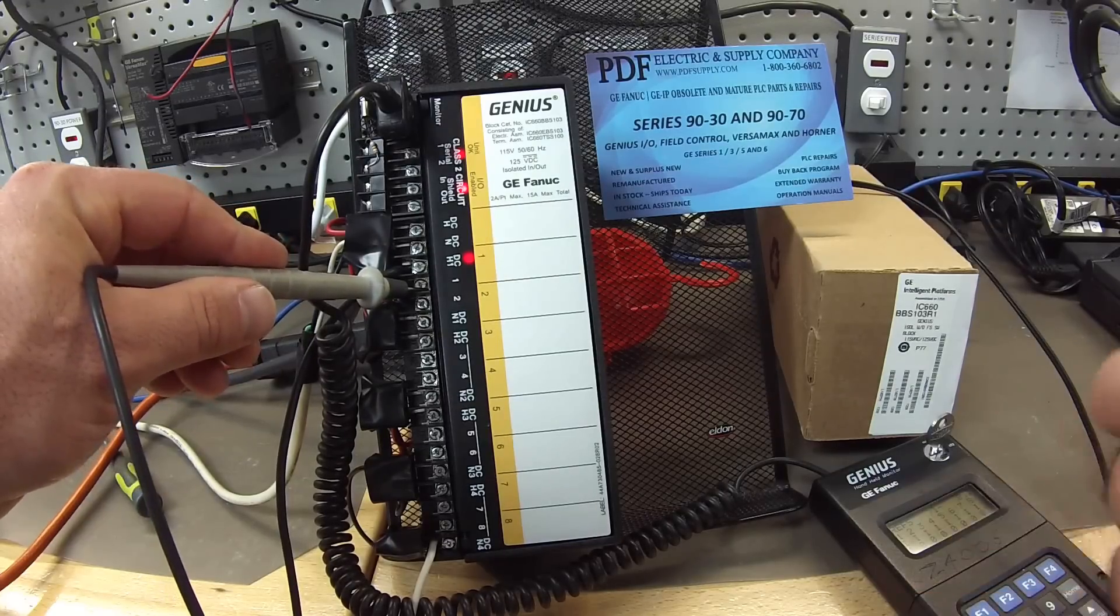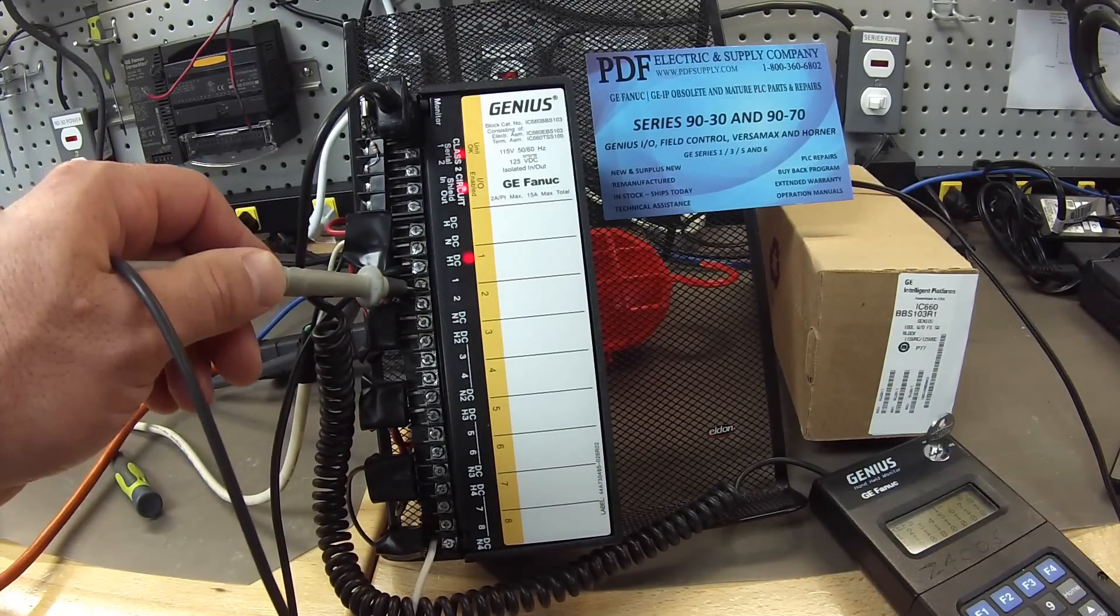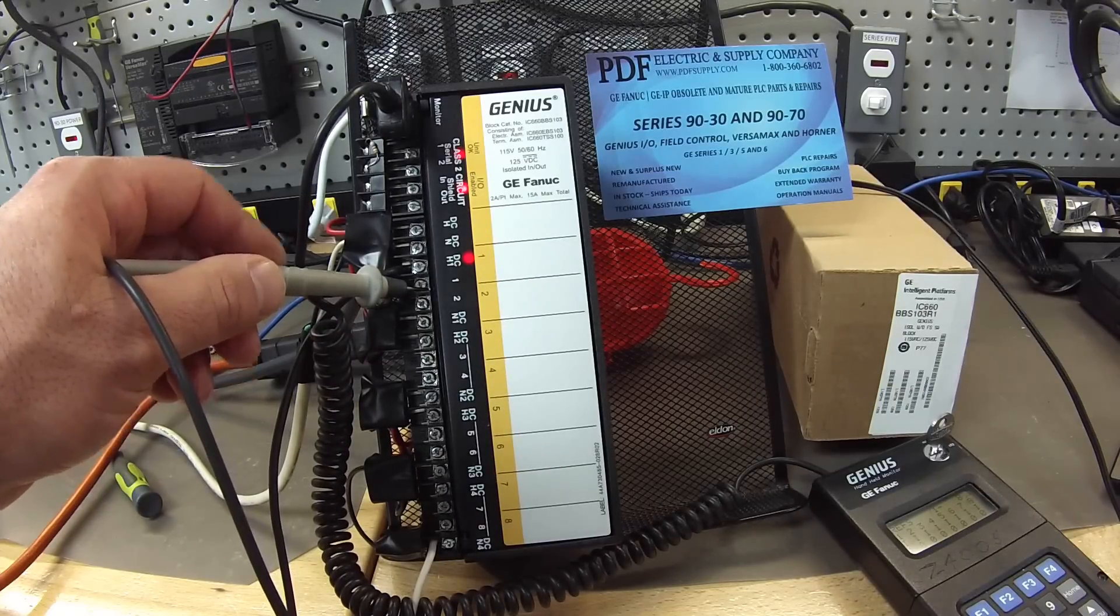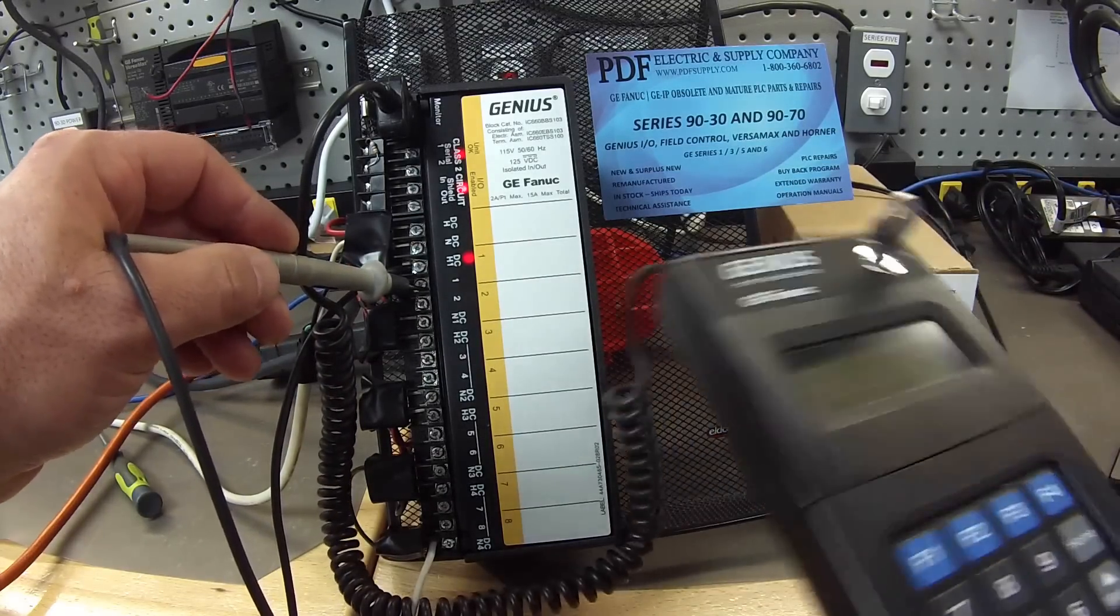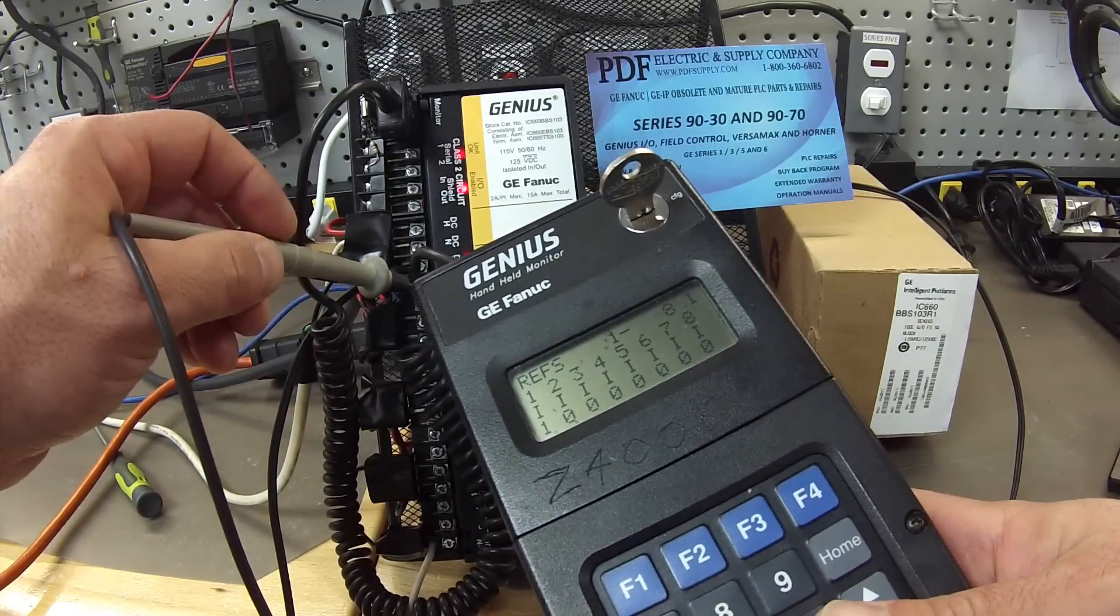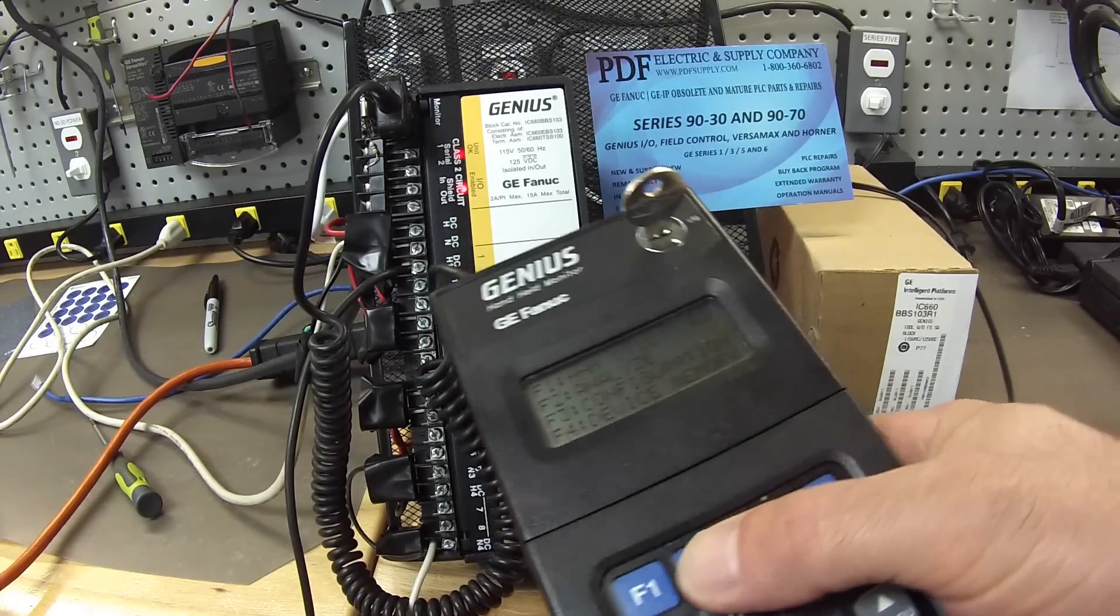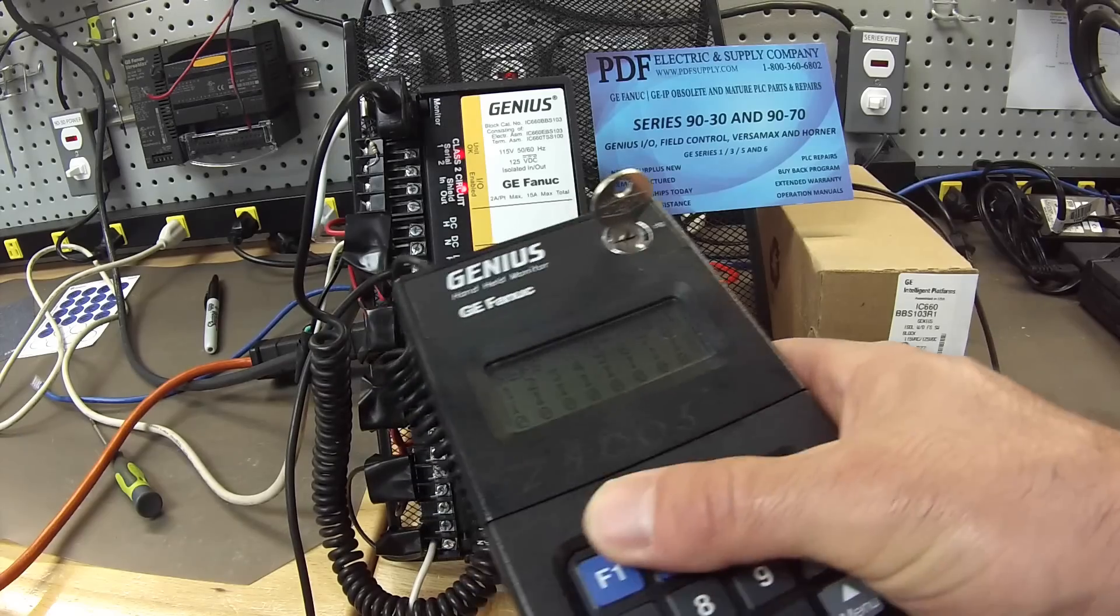One, you can open up Proficy Machine Edition and look at your discrete inputs and make sure that the channel is changing from a zero to a one. Or what I'm doing, and this is what I recommend, is that you hold the handheld monitor. Again, F2 to analyze and F1 to monitor block.